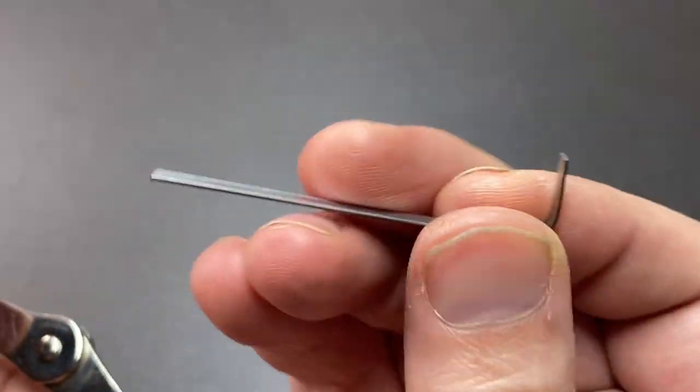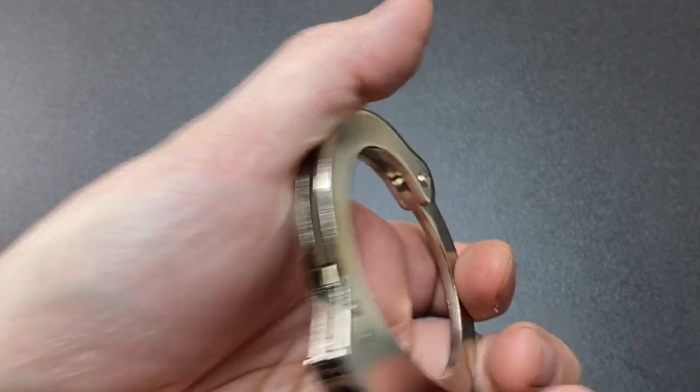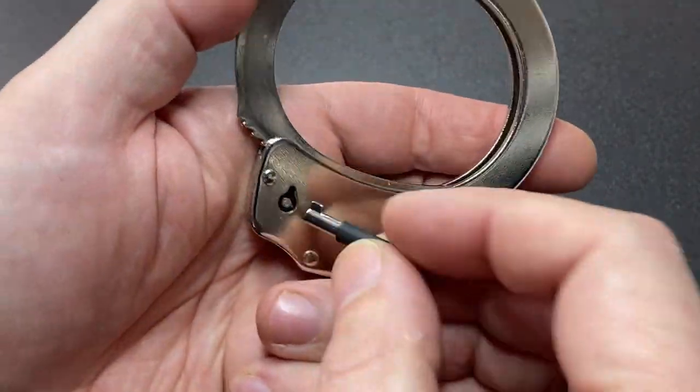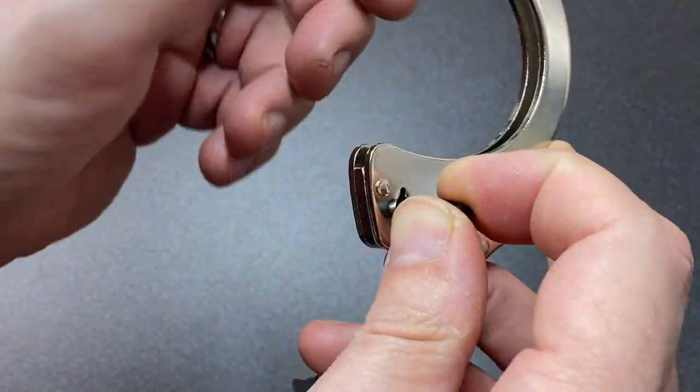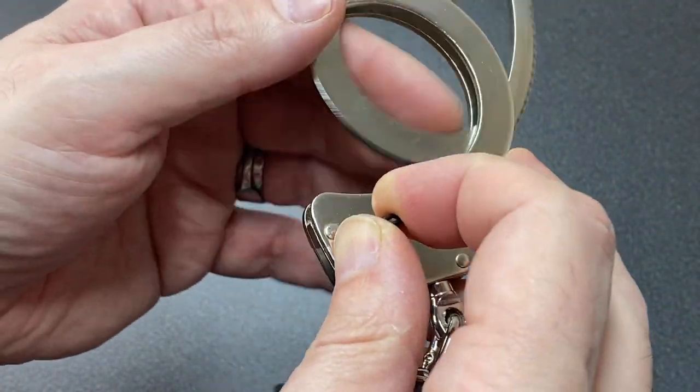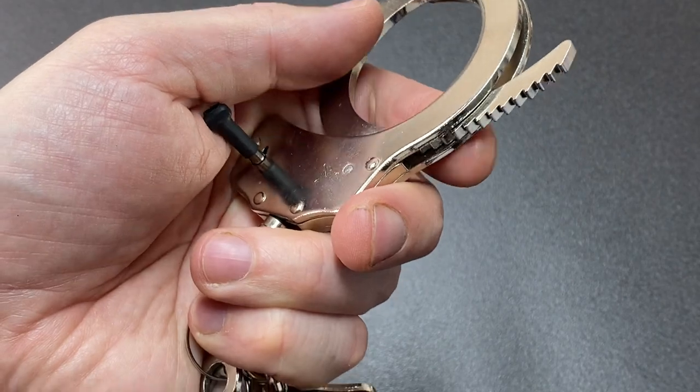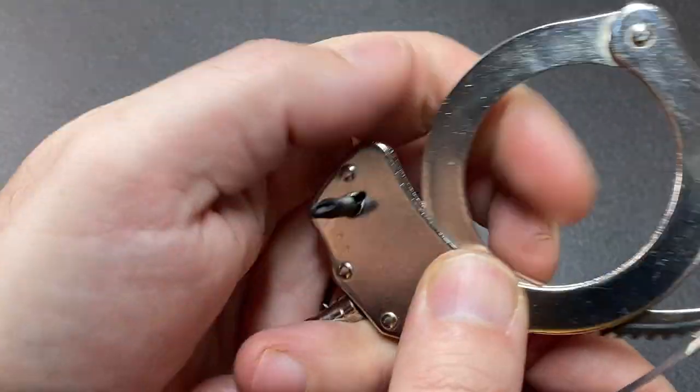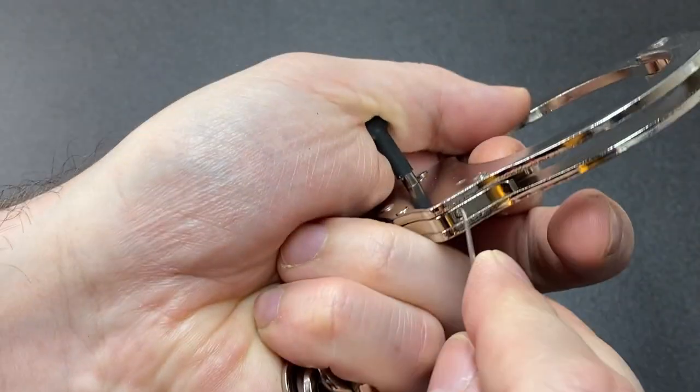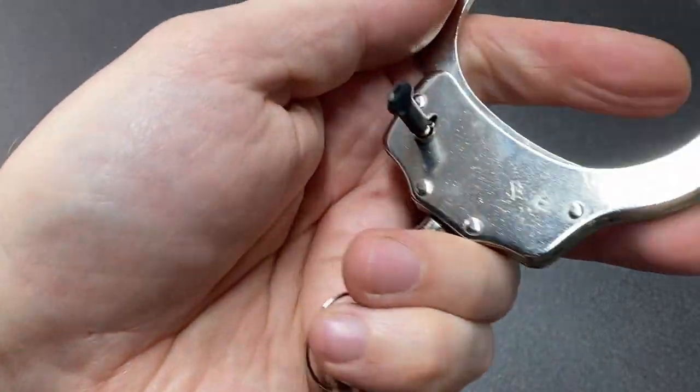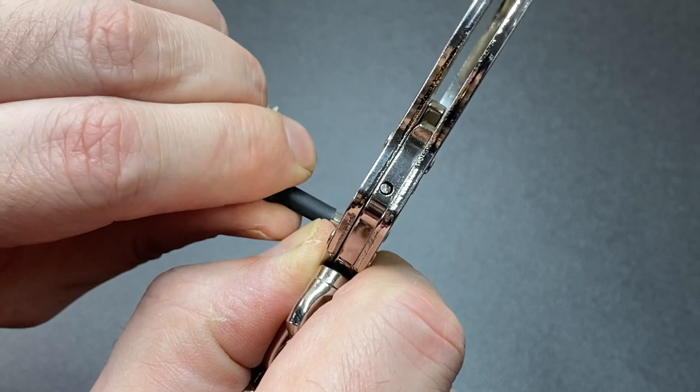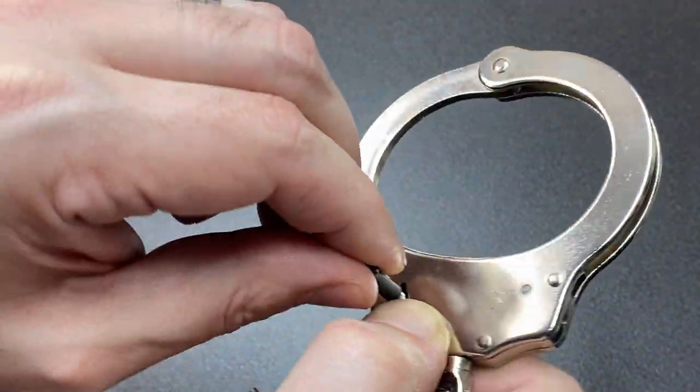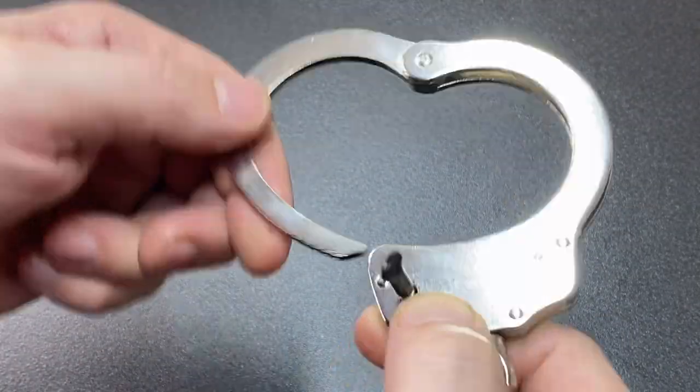The handcuff key itself works exactly as intended. I can unlock it freely by turning this way. If we have a double-locked handcuff, we can turn it the other way and it pops back out, allowing us to unlock the handcuff again. That works too.